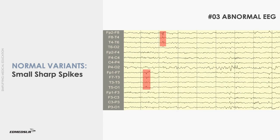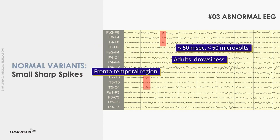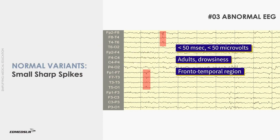Small sharp spikes of sleep, also known as benign epileptiform transients of sleep, are monophasic or diphasic spikes with steep ascending and descending limbs. They have short duration and low amplitude, with duration being less than 50 ms and amplitude less than 50 microvolts.